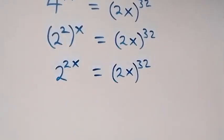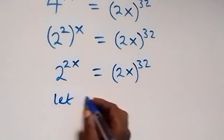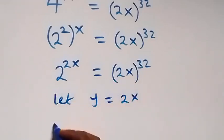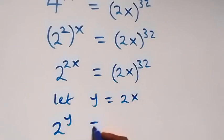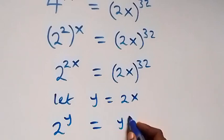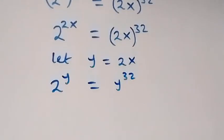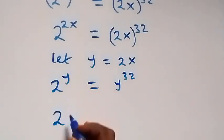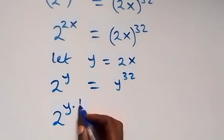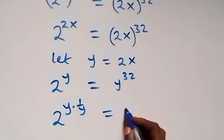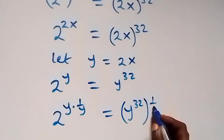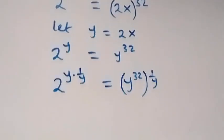Let y be equal to 2x. Here and here we can write this as 2 raised to power y now equals to y raised to power 32. Let's remove this power y and multiply both powers by 1 over y, so we have 2 raised to power (y × 1/y) equals to y raised to power 32 raised to power 1/y.